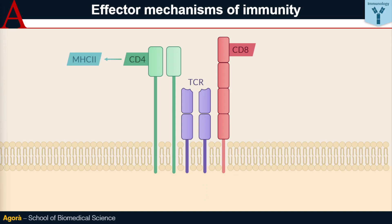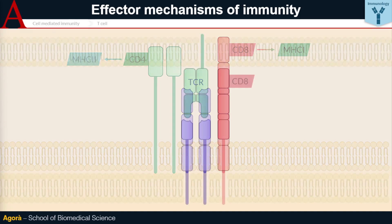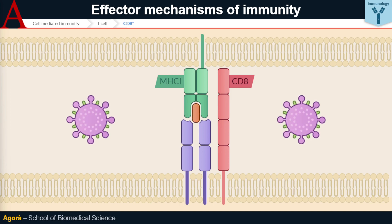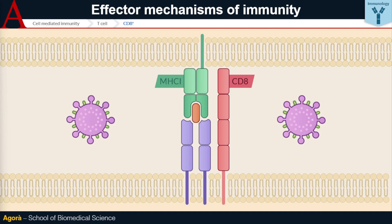CD4-plus T lymphocytes recognise class 2 MHC molecules, while CD8-plus T lymphocytes recognise class 1 MHC molecules. Class 1 MHCs are expressed by almost all cells in the body. Normally they express self-antigens, which are not able to trigger an immune response. However, a virus-infected cell or cancer cell may start expressing different antigens on class 1 MHCs, and CD8-plus T lymphocytes can recognise and activate against them.